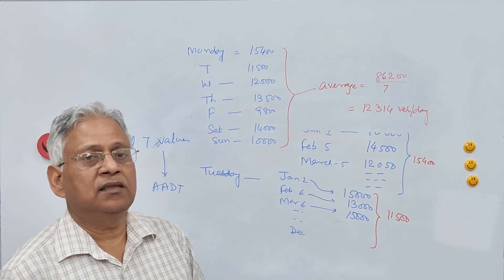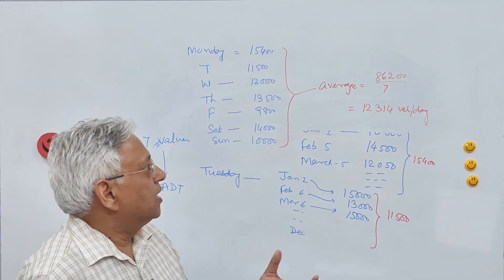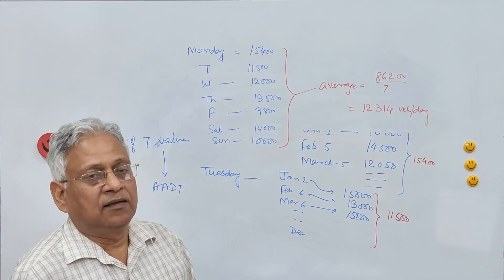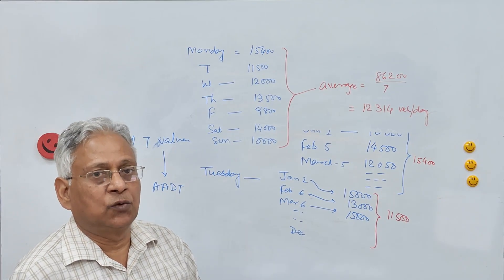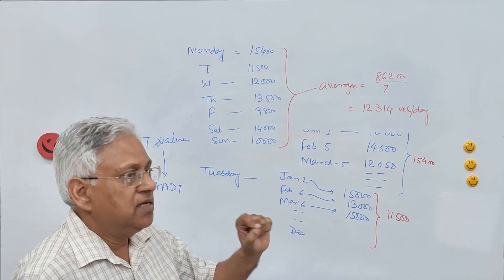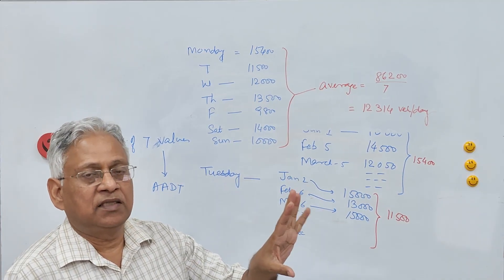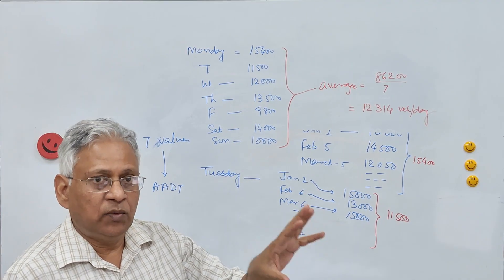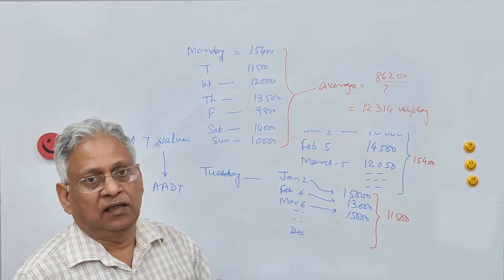The ASTO method requires lesser data, less manpower, and fewer resources. Whereas calculating AADT by the simple average method is quite challenging when it comes to field data collection.